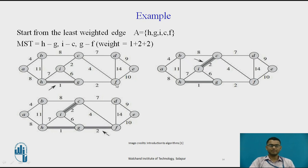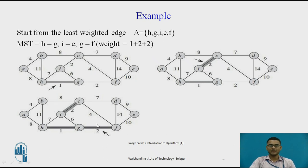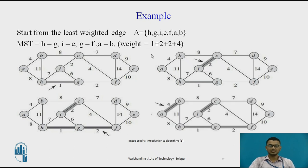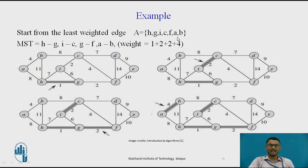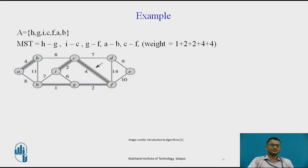In the third step I include the next edge in sorted order, which connects G to F. So G and F are also included in set A and their weight is added to the MST. Next we add edge A to B having weight 4, so 4 is also added to the MST and the two nodes A and B are added to set A.